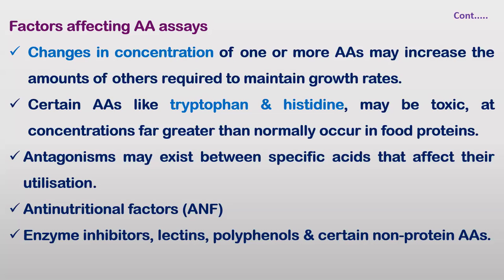Anti-nutritional factors present in diet or food protein may also affect the utilization of other nutrients in that diet. These include enzyme inhibitors, lectins, polyphenolic compounds, and certain non-protein amino acids like mimosine, which is a toxic amino acid found in different feed ingredients. These factors significantly affect the amino acid assay and should be considered when estimating the protein quality of a particular feed.